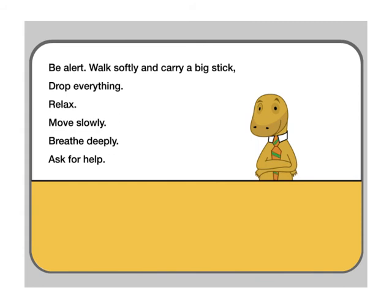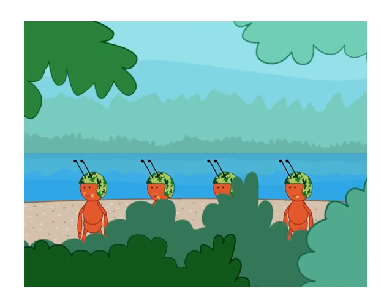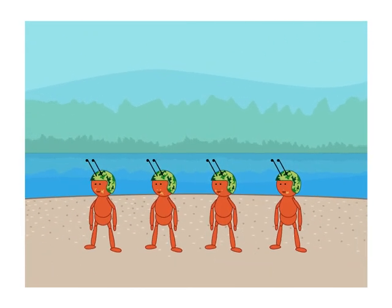Como is glad that Galileinstein explained quicksand to him and even gave Como a trick to make fake quicksand.